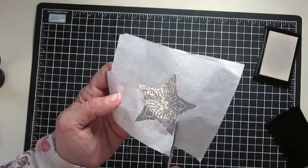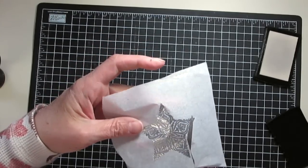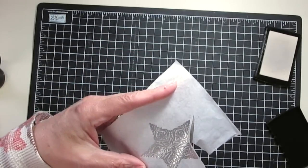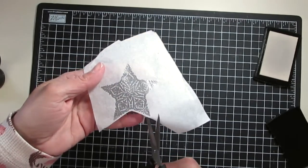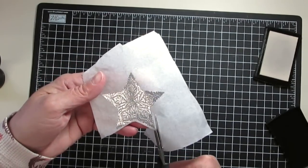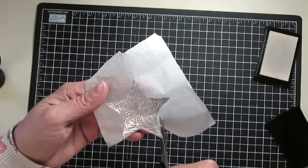So I'm going to trim it out with my scissors and I'm just leaving a little bit of a border because that's going to melt into my candle and so I want it to have something that it can grab on to.